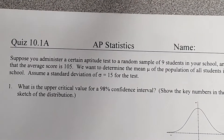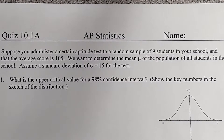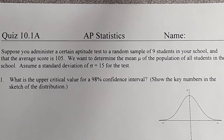Suppose you administer a certain aptitude test to a random sample of nine students in your school and the average score is 105. We want to determine the mean of the population of all students in the school. Assume a standard deviation of sigma equals 15 for the test. They're going to give us the population standard deviation — that's what sigma is, a parameter.